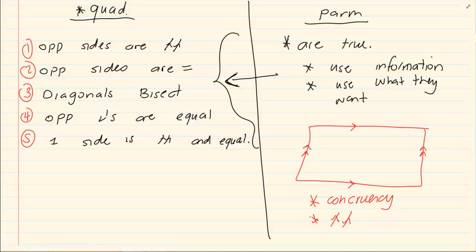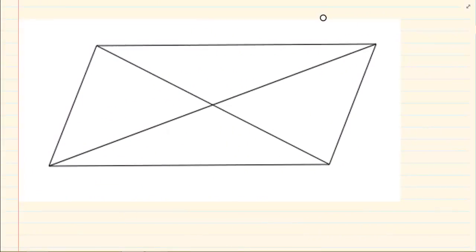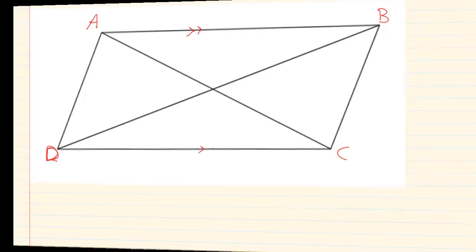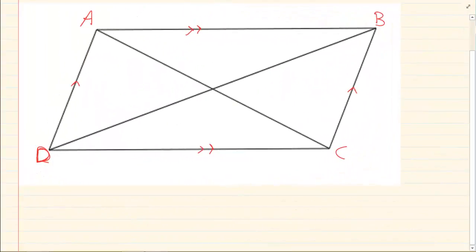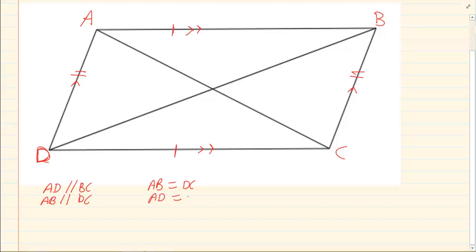Now let us discuss the parallelogram. If you look at the parallelogram and I tell you that this is a parallelogram, there are certain qualities that a parallelogram has. Number one, the opposite sides are parallel — that is how come it is one of the reasons to say a quadrilateral is a parallelogram. So therefore, AD is parallel to BC, or AB is parallel to DC. The second one is that the opposite sides are equal, so AB would equal to DC and AD would equal to BC.